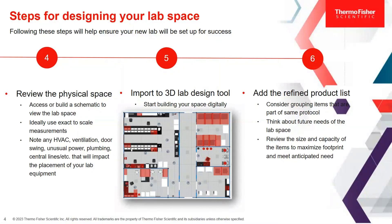I'm going to go to the video to walk through — and I'll voice over this video as well. Essentially, you're going to start with building the infrastructure of the lab: the walls, the doors. Then you're going to add the bench work, the casework, and some of the cabinets, maybe desks. And then you're going to add the products that you've chosen from your product list. Let's skip over to the video and have a look at how that's done.